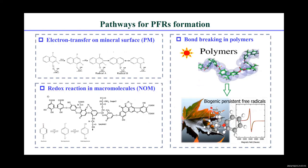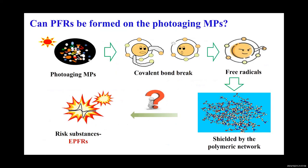Formation of EPFR on those environmental media is always associated with electron transfer from aromatic compounds to the transition metal on mineral surfaces. Or they might be formed by redox reaction in some macromolecules like natural organic matter, as well as bond cleavage in polymers like lignin, during irradiation, heating, or electrolysis.